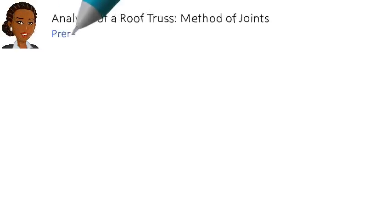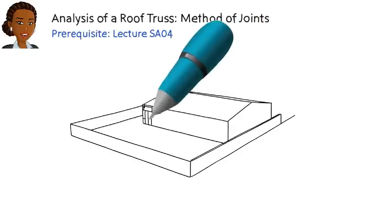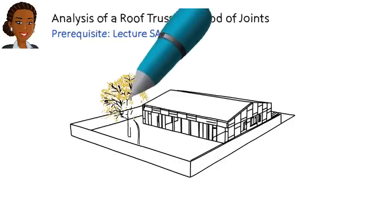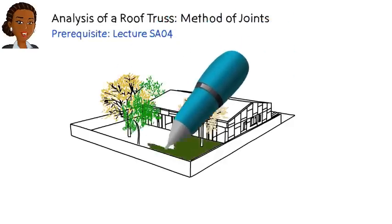We introduced the method of joints for analyzing statically determinate trusses in lecture SA04. This lecture offers a review of this method in the context of a real-life structure.